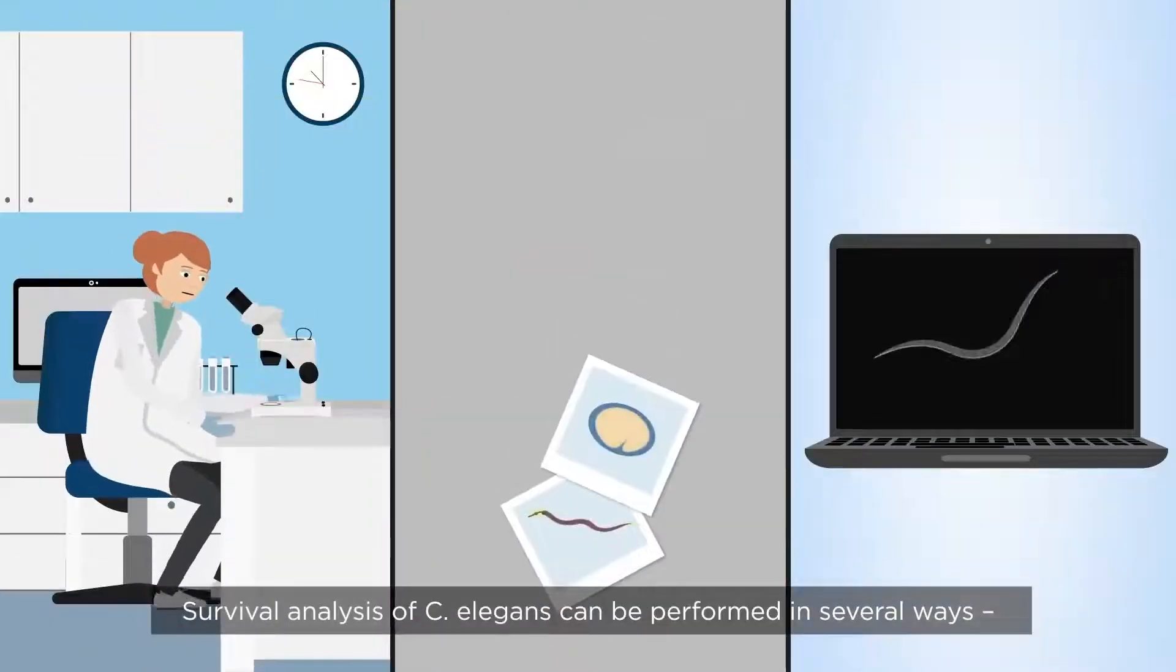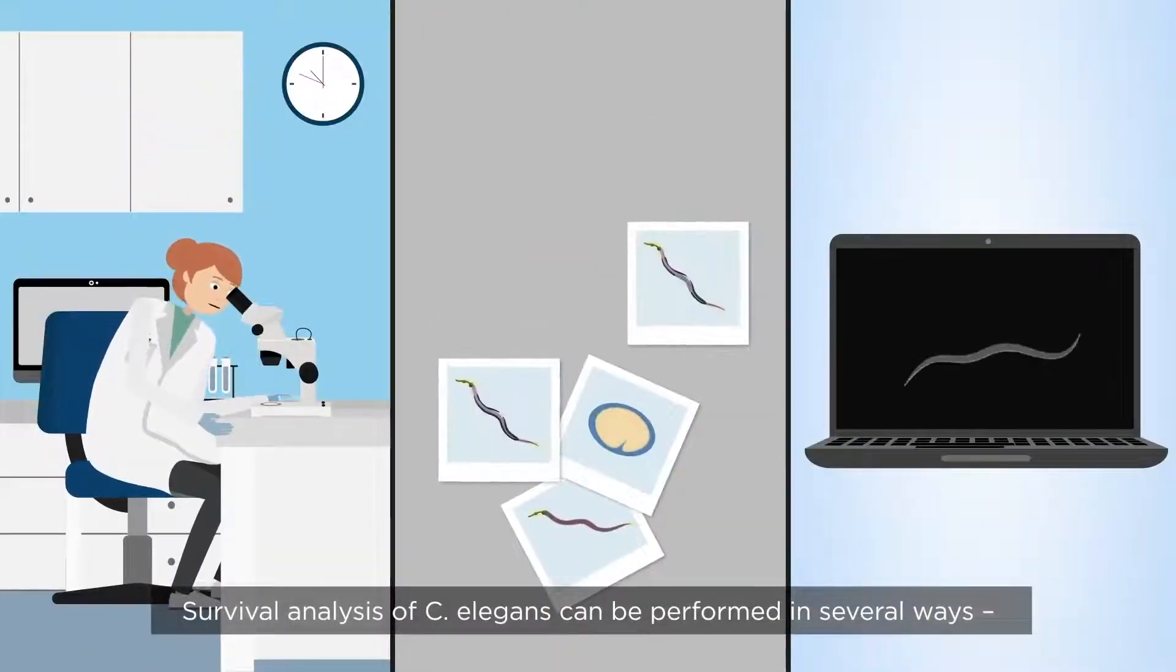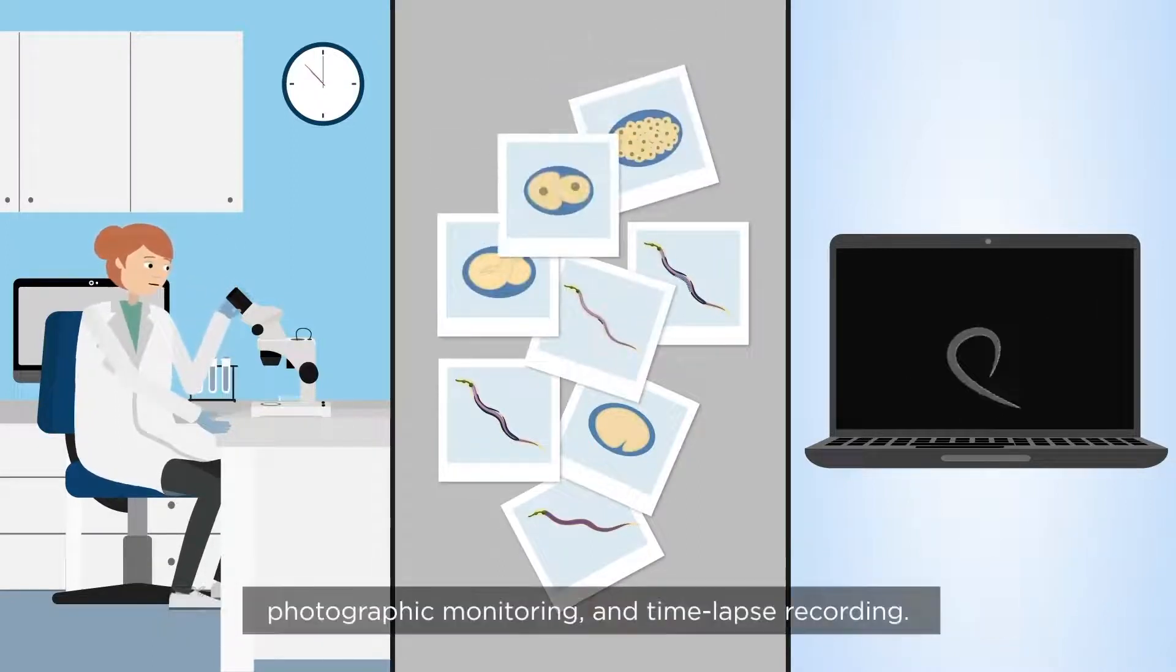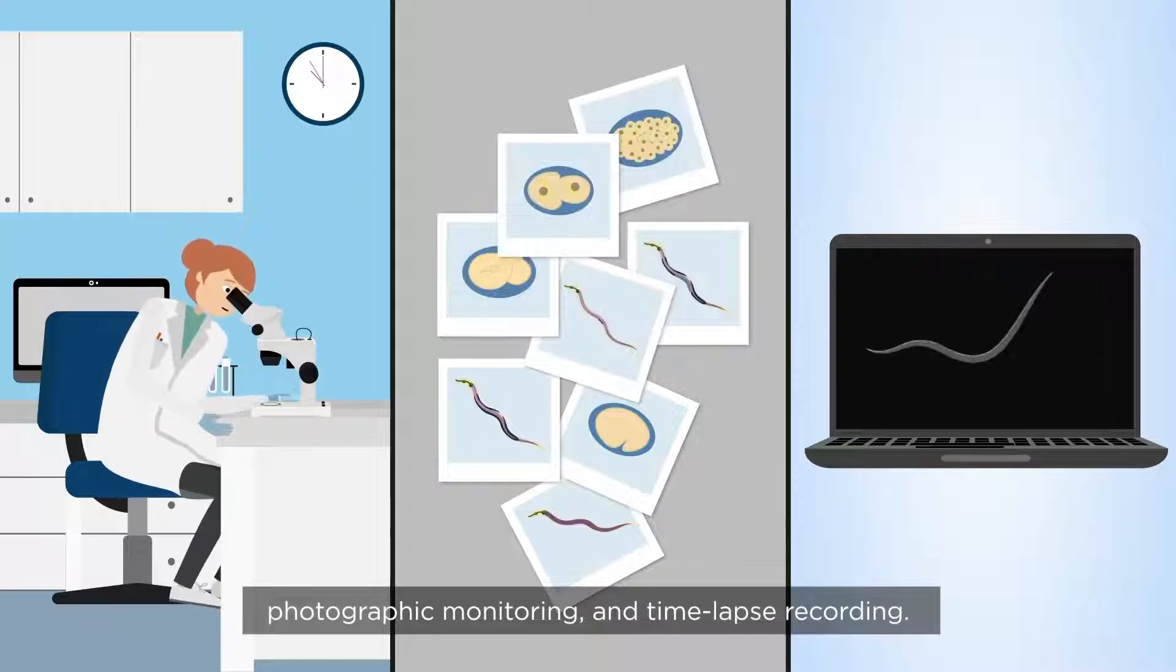Survival analysis of C. elegans can be performed in several ways, including manual observation through a dissecting microscope, photographic monitoring and time-lapse recording.